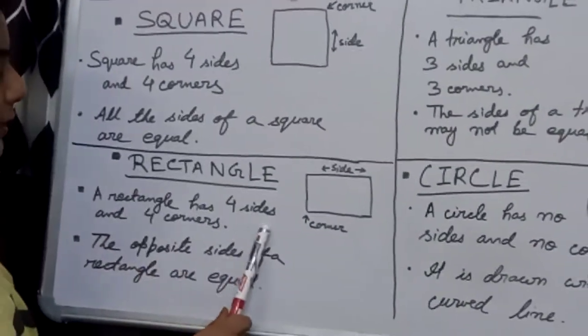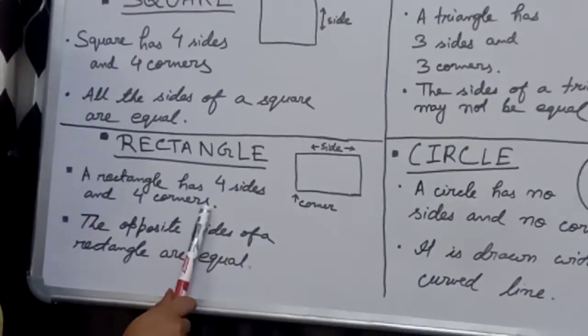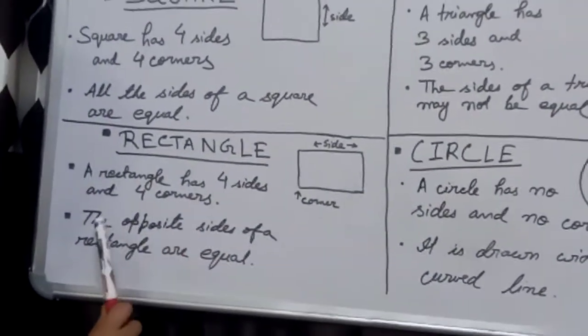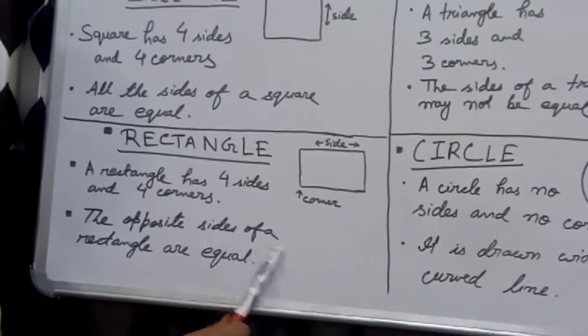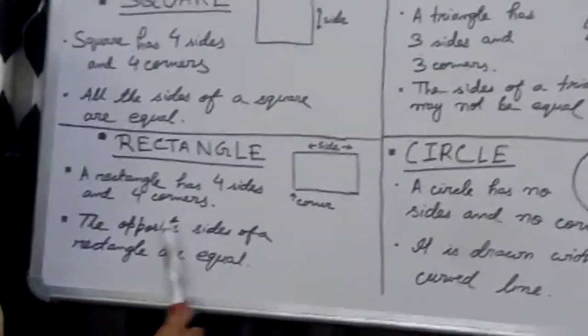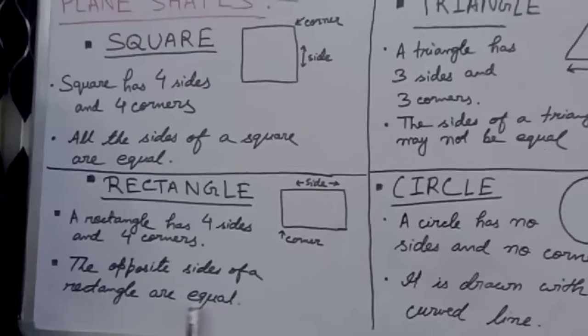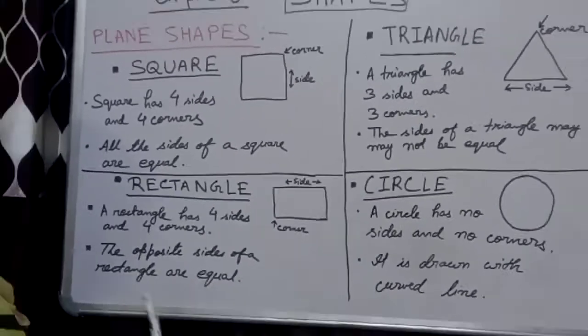So, a rectangle has four sides and four corners, and the opposite sides of a rectangle are equal.